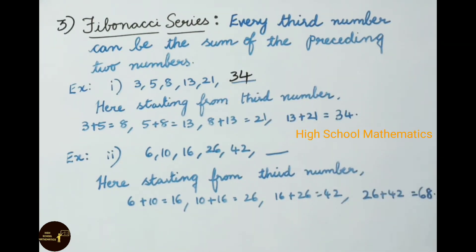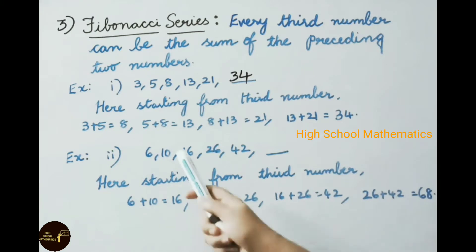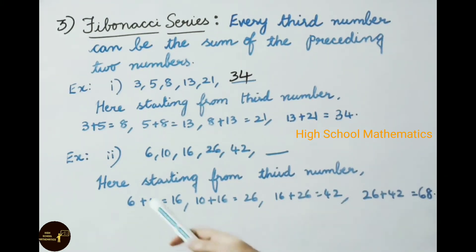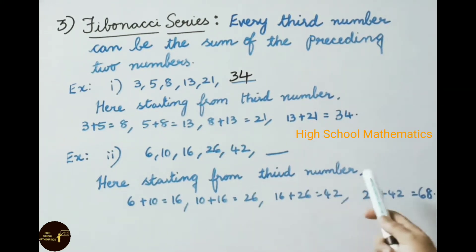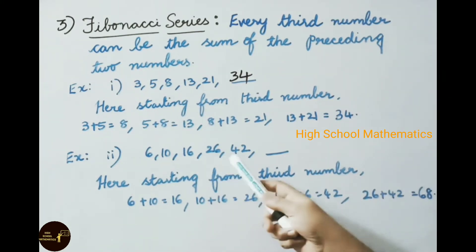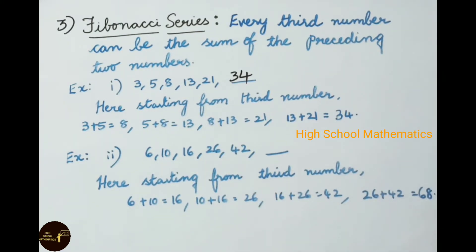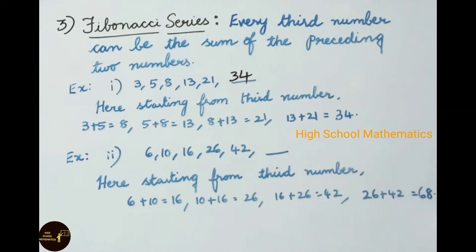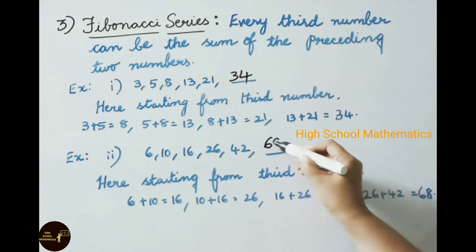See now the second Fibonacci example: 6, 10, 16, 26, 42. Starting from the third number: 6 plus 10 is 16, 10 plus 16 is 26, 16 plus 26 is 42. So the next term is 26 plus 42, which is 68.